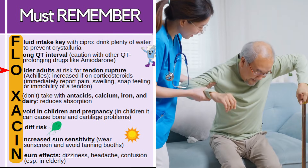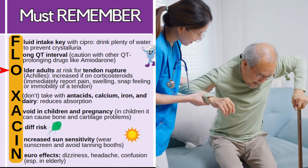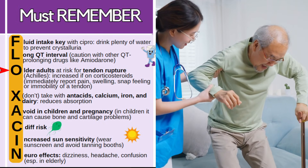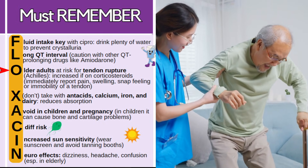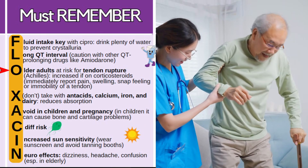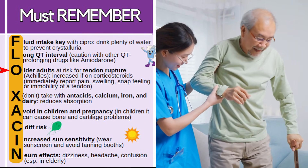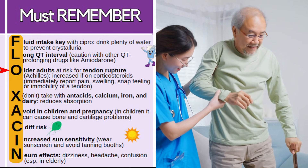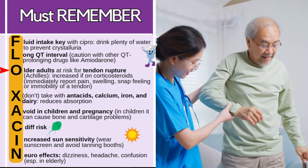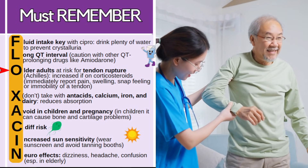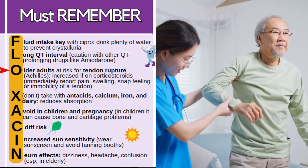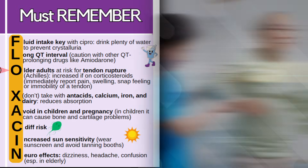Older adults are at risk for tendon rupture, particularly the Achilles tendon, and this risk is increased if they're also taking corticosteroids. Tell the patient to report immediately any pain in that area, swelling, a snap feeling, or a decrease in mobility.